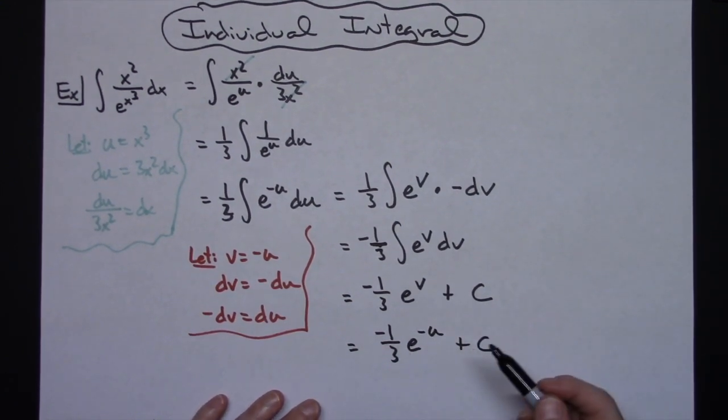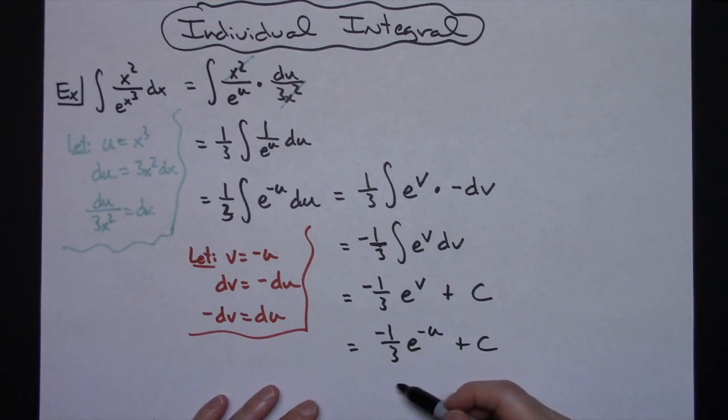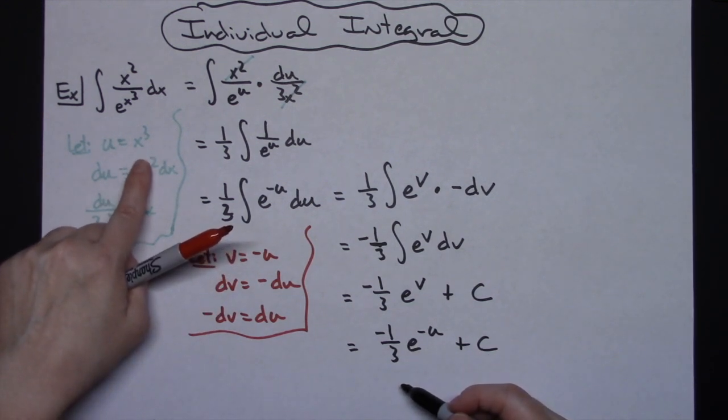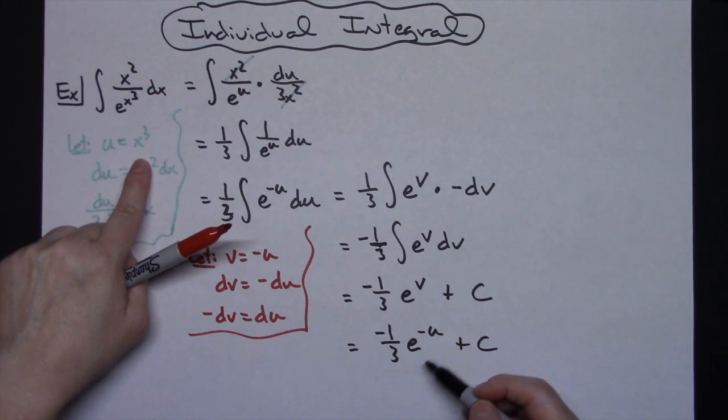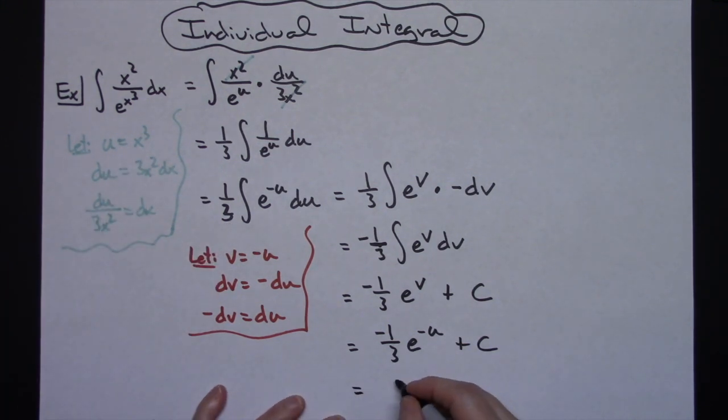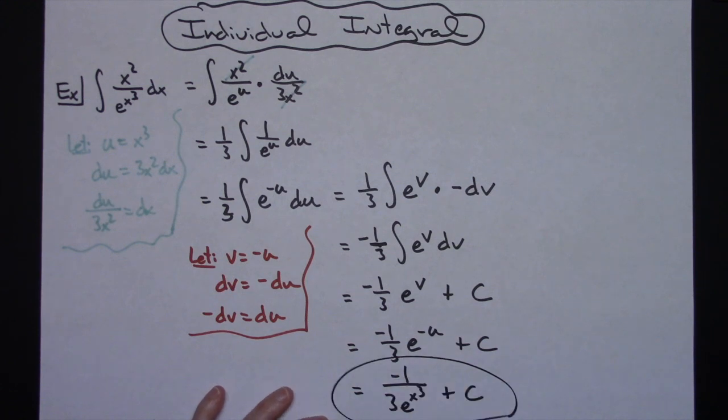This is going to let me, I'm going to do this all in one step here. This e to the negative u I'm going to bring to the bottom and make positive, and at the same time substitute in the x to the third for the u. So I'm going to end up with a final answer of negative 1 over 3e to the x to the third plus c.